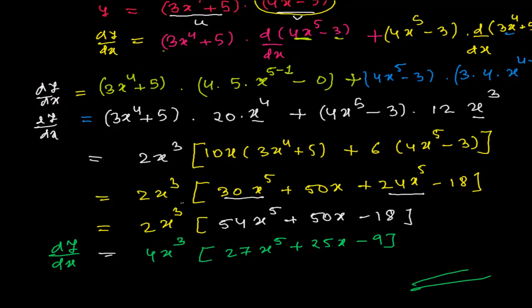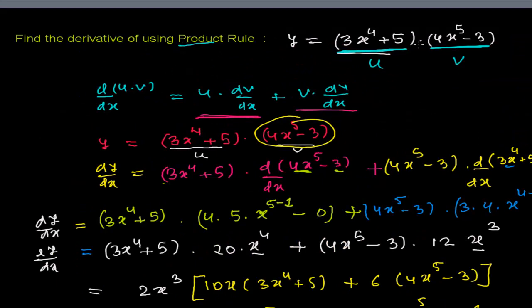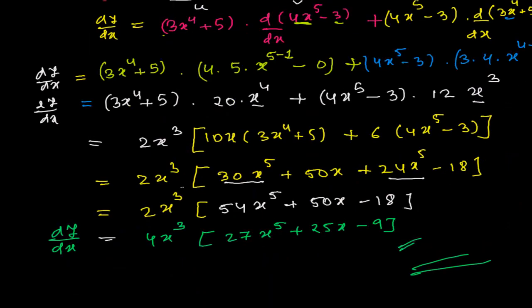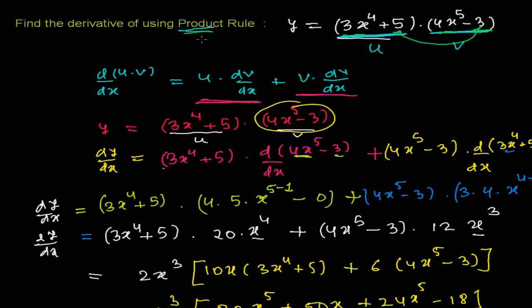And here we are done — we found the derivative using the product rule. As I mentioned, you can also find this individually by first expanding the product: multiplying (3x⁴ + 5) by (4x⁵ - 3) term by term, and then applying the simple power rule. You'll arrive at the same answer. There are many methods to solve, but the question says to use the product rule, so that's why I solved it this way. I hope you're getting the concept of using the product rule. Goodbye, we will meet in the next video — bye bye!